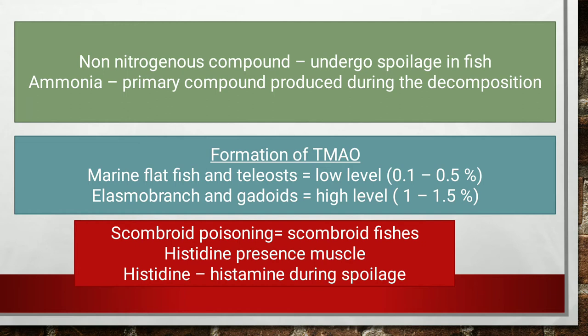In marine flatfish and teleosts, the level of TMAO is low — about 0.1 to 0.5 percent. In elasmobranchs and gadoids, the level is higher — around 1 to 1.5 percent. In elasmobranchs, scombroid poisoning is another case we need to consider.